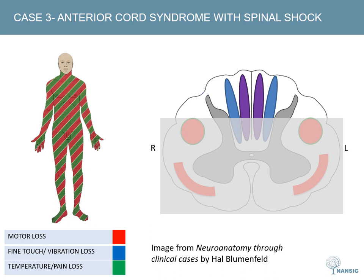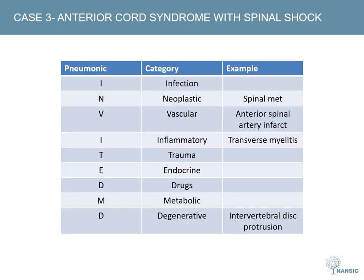Dorsal column function is spared, allowing us to locate this lesion to the anterior portion of the cervical spinal cord — this is an anterior cord syndrome. Given the history of aortic dissection and very acute onset, a vascular diagnosis is most likely. The anterior portion of the cord is supplied by the anterior spinal artery, which arises from the two vertebral arteries. A dissection affecting the proximal aorta, or corrective surgery using aortic clamps, can cut off perfusion to the anterior spinal artery, resulting in the anterior cord syndrome seen here.